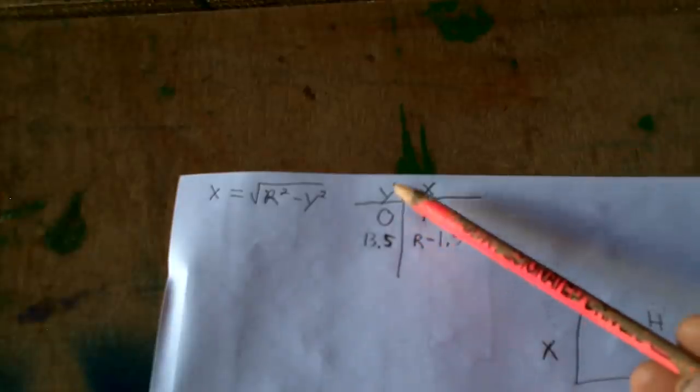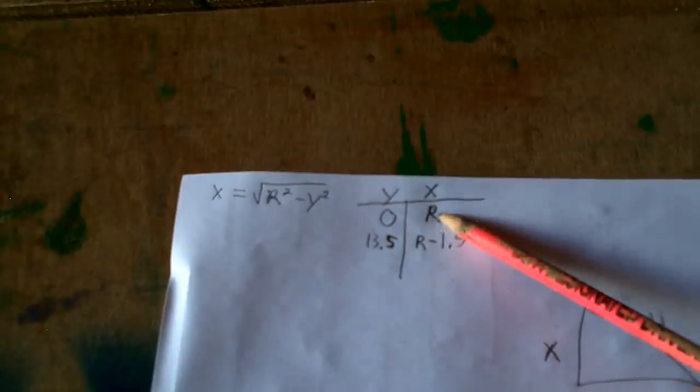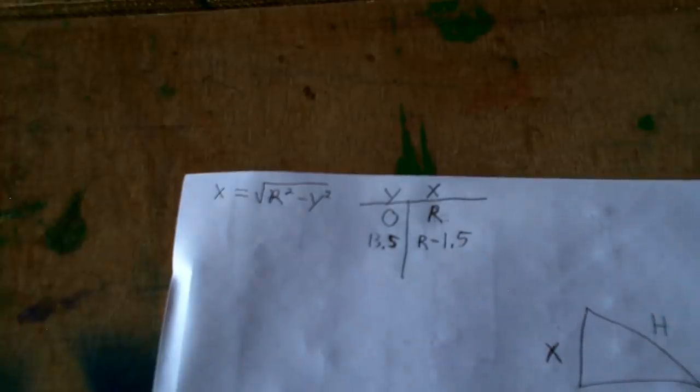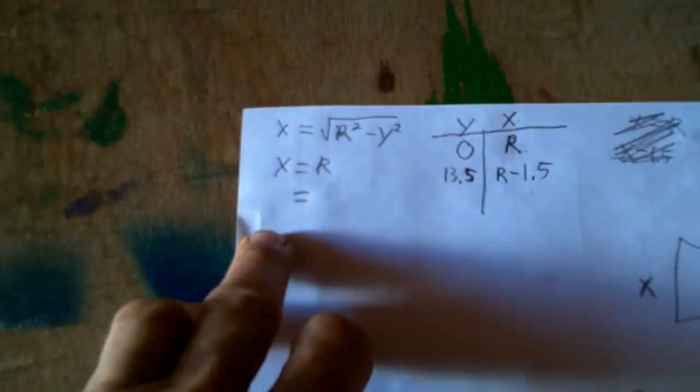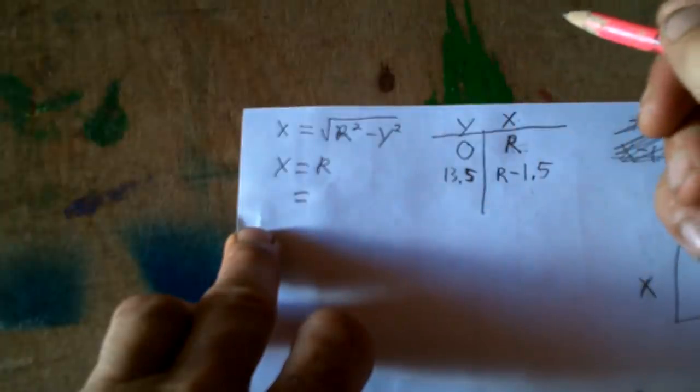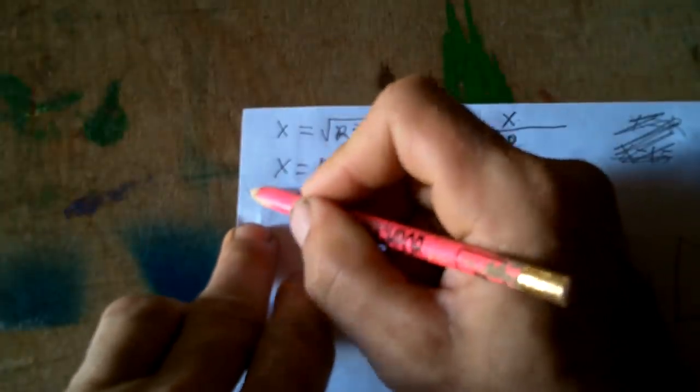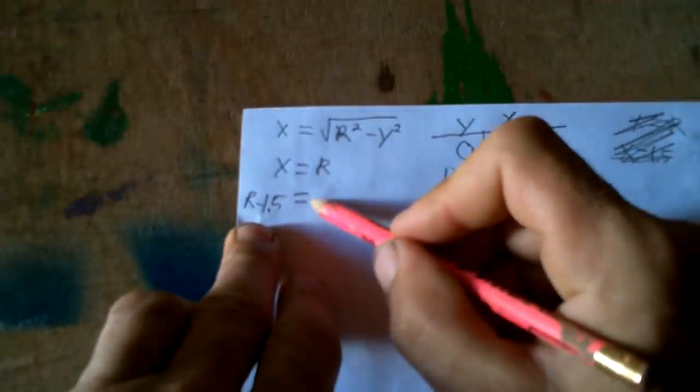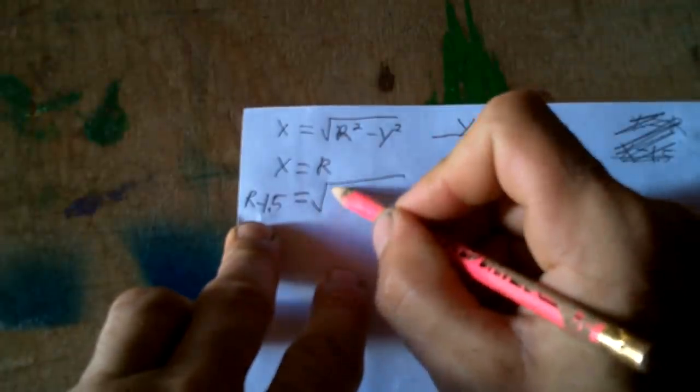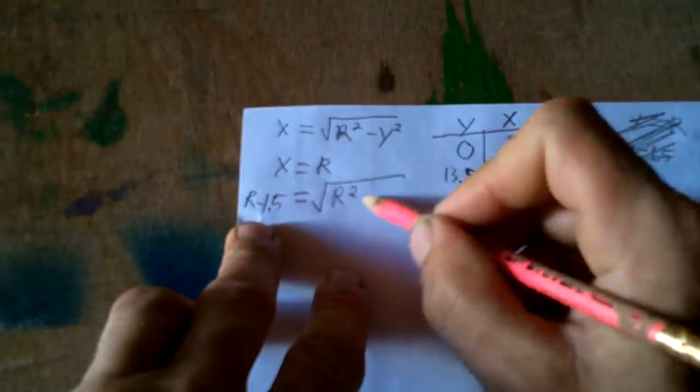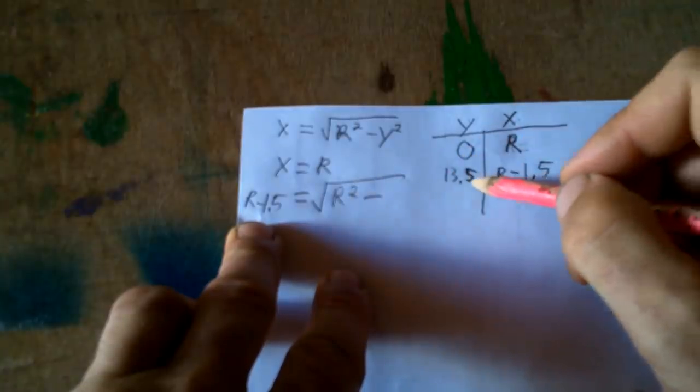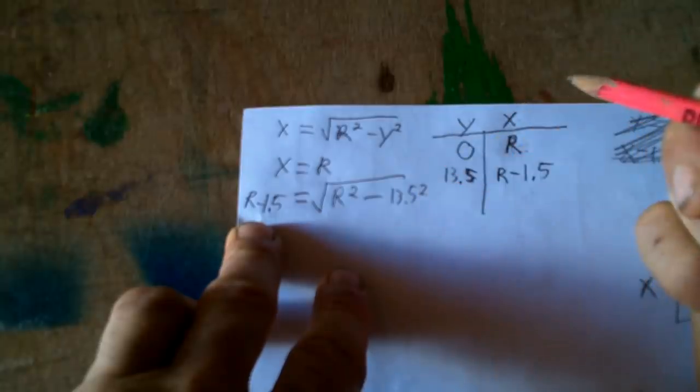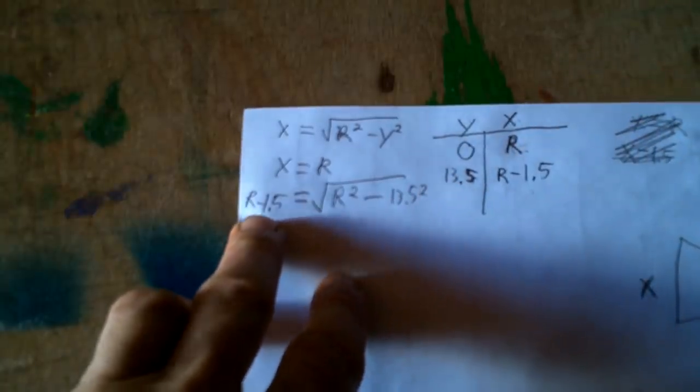So when y is 0, x is the radius. When y is 13.5, x is r minus 1.5. r minus 1.5 equal to r squared minus 13.5 squared. I've backed myself into a square root situation. I should have just left this as x squared plus y squared equals r squared.